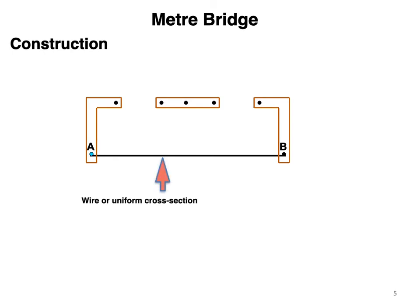The wire AB, thick copper or brass strips - there are three strips. Here we have a left gap and right gap for two arms of the bridge, as you will see.